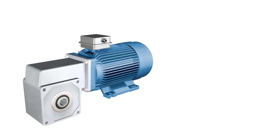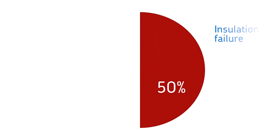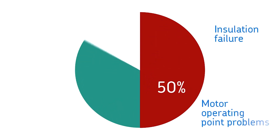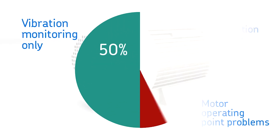Many sites use vibration monitoring on their motors. This is good, but vibration monitoring misses up to 50% of motor failures. These failures are due to insulation failure and motor operating point problems.